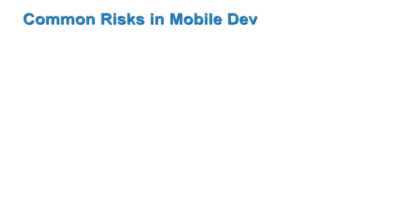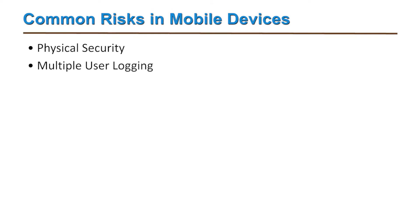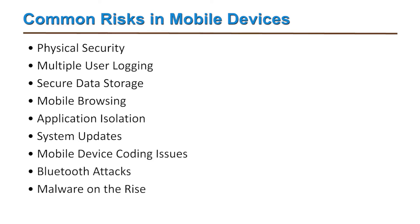As the number of mobile users increases, so does the number of attackers trying to compromise confidential information. This results in various personal risks, including: physical security, multiple user logging, secure data storage, mobile browsing, application isolation, system updates, mobile device coding issues, Bluetooth attacks, malware on the rise, and serious threats from new features exploited in mobile devices.